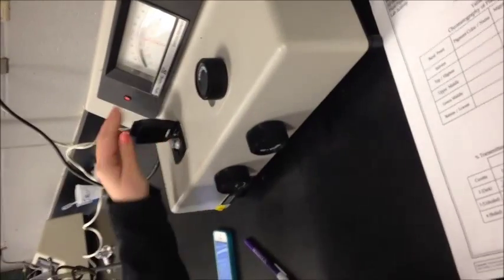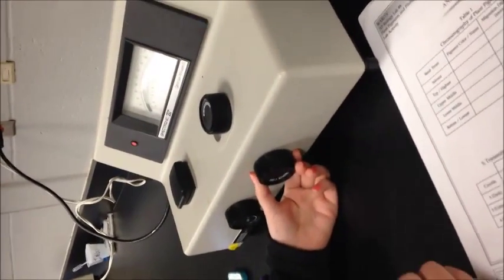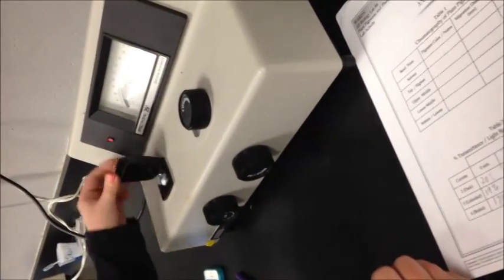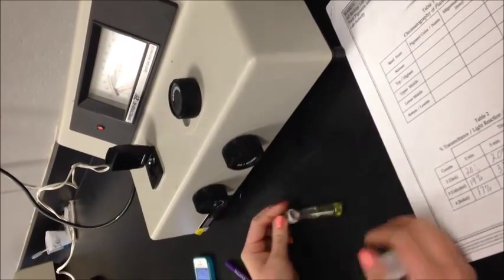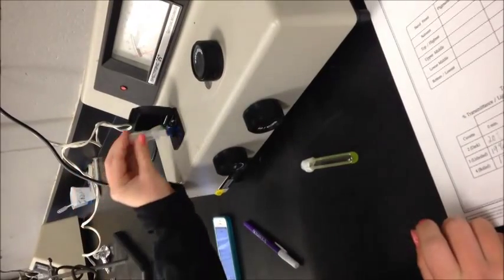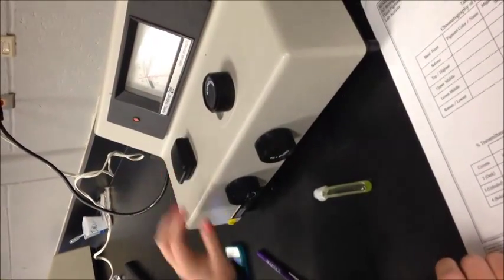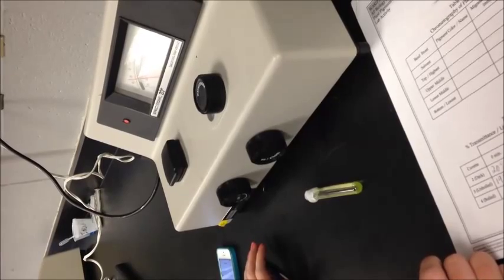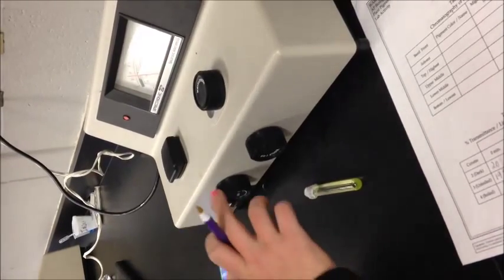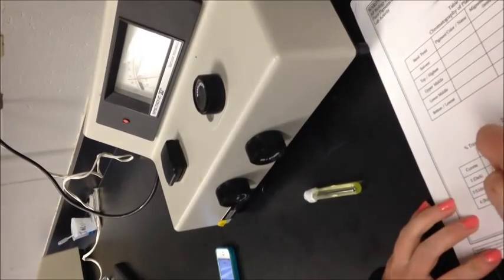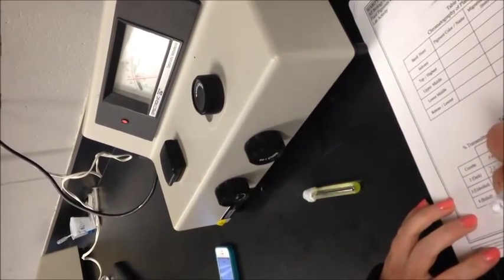Again, we're placing cuvette 1 into the spectrophotometer, making sure it's at 100% transmittance. And now this is cuvette 4. We're placing it in, recording how much transmittance it is, and it looks like it's about 17-18% transmittance. So we'll record that.